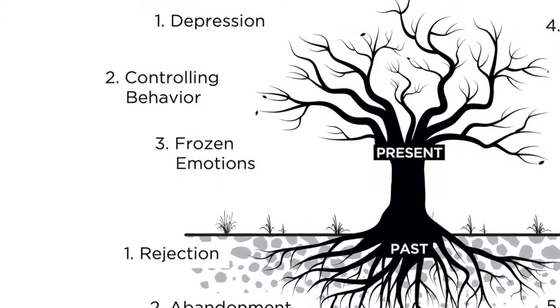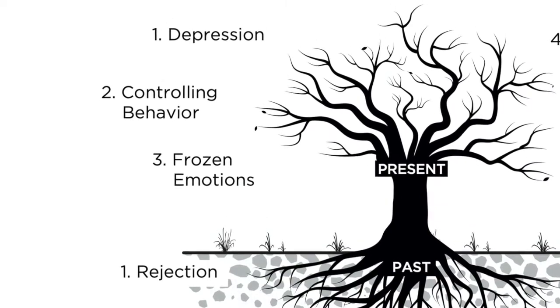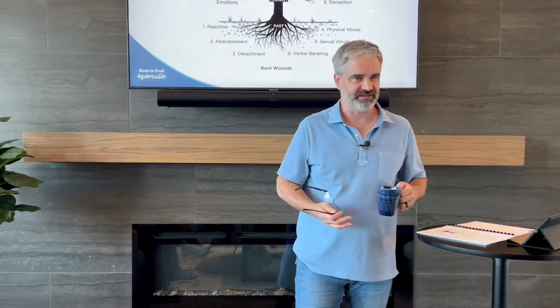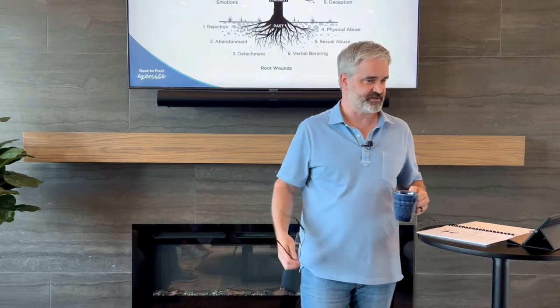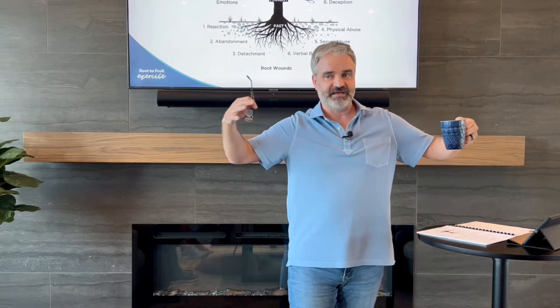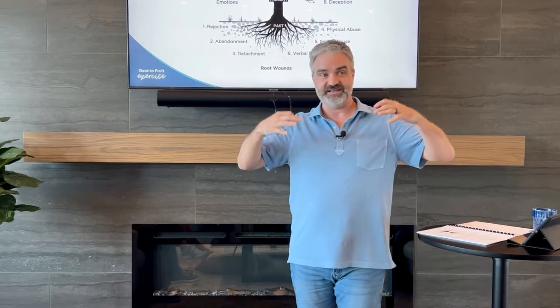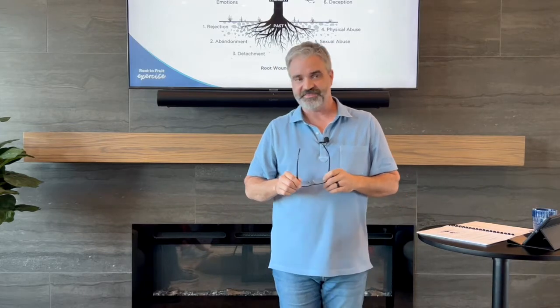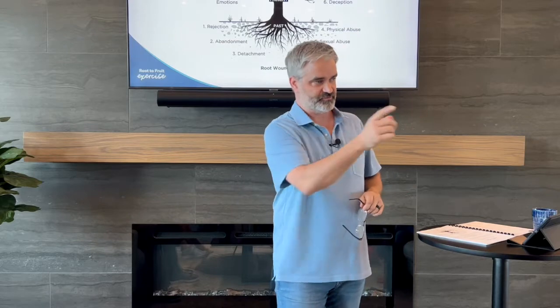Look at number one at the bottom: rejection. What does it correspond to in fruit behaviors up top? Depression. Why would someone be depressed? What leads to depression? There's poor self-esteem. Depression is a heaviness — emotion turned inward. It's a deflation. There's not the strength on the inside of identity and confidence and hope and vision and looking forward. Something's been deflated.